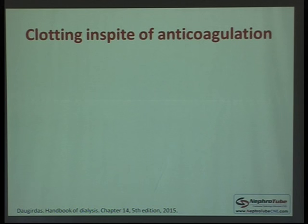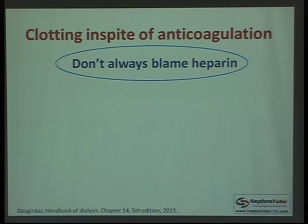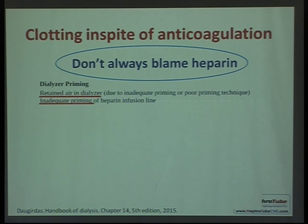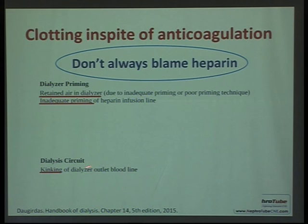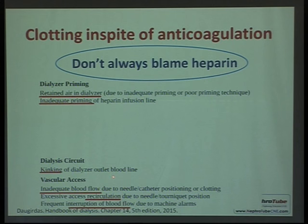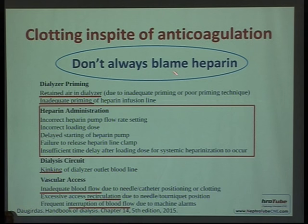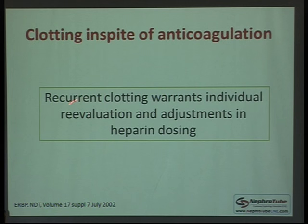If clotting occurs despite anticoagulation, don't always blame heparin. Other causes include inadequate priming with air retention in the circuit, kinked dialysis circuits, vascular access problems such as inadequate blood flow due to stenosis, recirculation, or interruption of blood flow due to machine alarms, or a problem with heparin administration or dosage. Especially if there is recurrent extracorporeal clotting and you are sure adequate heparin is being given, re-evaluate and look for other causes, though recurrent clotting does warrant re-evaluating and adjusting the heparin dose.